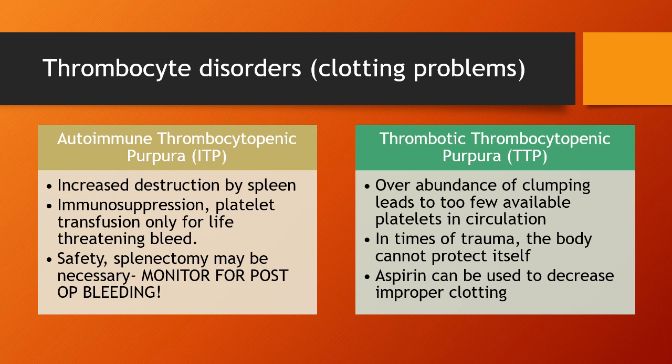Thrombotic thrombocytopenic purpura is when available platelets are used up and there are none available in times of trauma or injury, so the patient can't clot. It's not hemophilia but presents similarly — when injured the patient can't clot off and protect themselves.